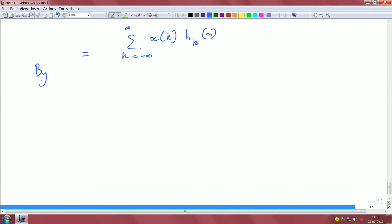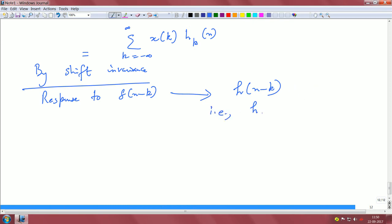Now let us apply shift invariance, because we said that the system is endowed with shift invariance property. The response to delta(n minus k) is h(n minus k). So your h_k(n) can be replaced by h(n minus k), because it is shift invariant. Therefore, response to the input delta(n minus k) will result in h(n) to be delayed by k time steps, which is h(n minus k).